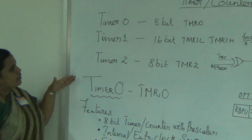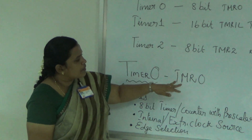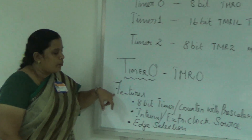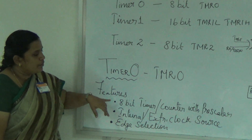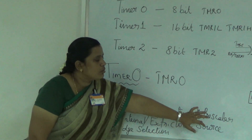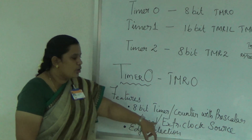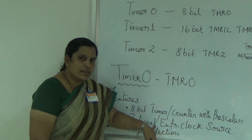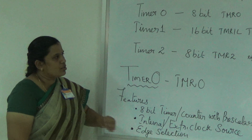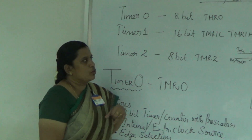Now we will go for Timer 0. Timer 0 is an 8-bit register, TMR0. The features include an 8-bit timer and counter without pre-scaler, and it supports both internal and external clock sources. We can also go for edge selection in the Timer 0 mode.